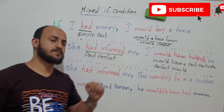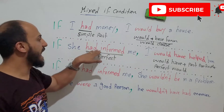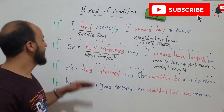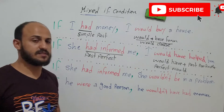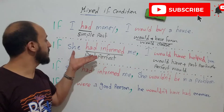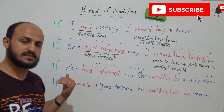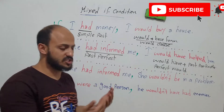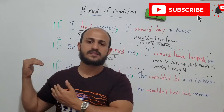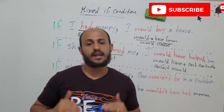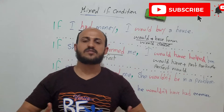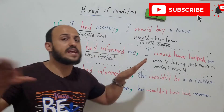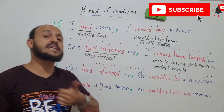The third one was: if she had informed me, I would have helped her. So here we use past perfect. This thing didn't happen in the past. I'm talking about what happened in the past — this is real but in the past, not now, and I'm talking about it hypothetically. The difference between the second and the third: the second is not real at all; the third is real in the past, not now.